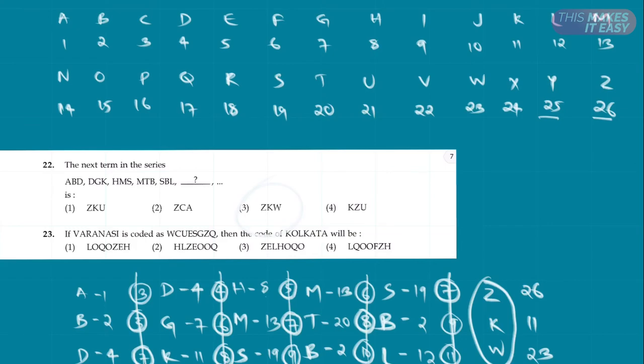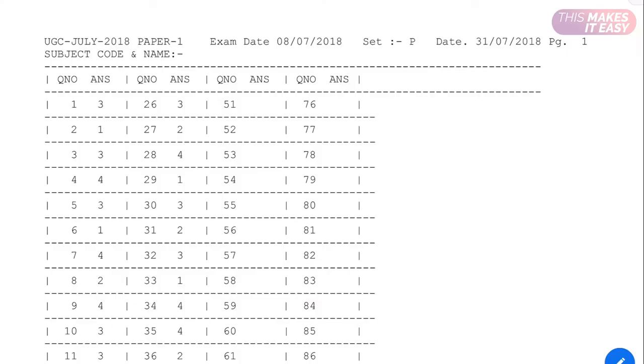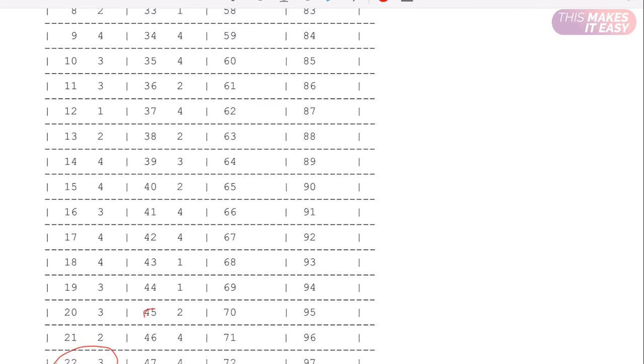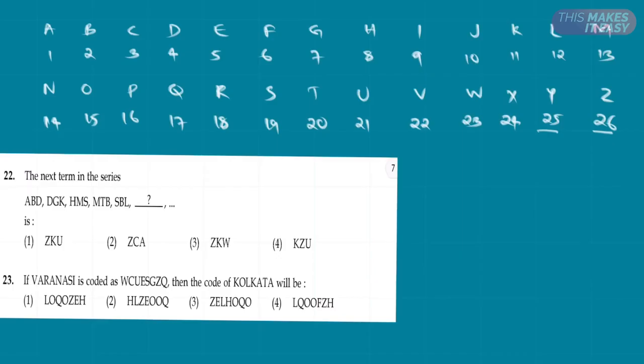We can cross-check in the answer key as well. Here is the answer key for that question. For question 22, the answer is third option. That's correct. Now let us look at the 23rd question.